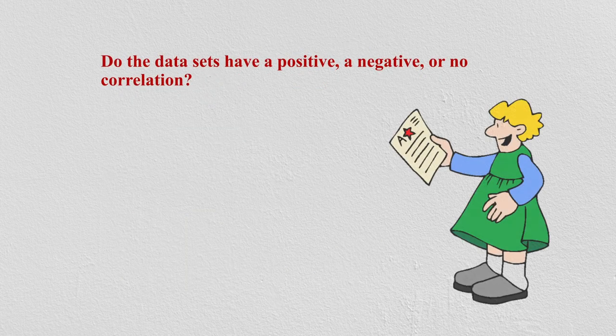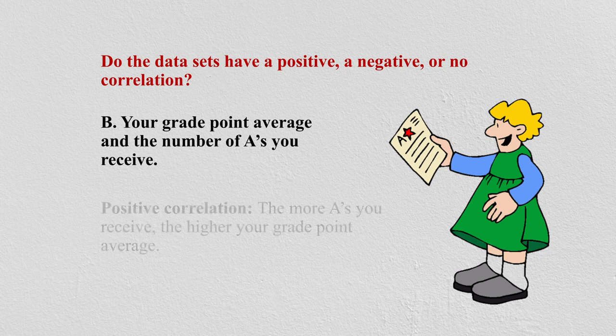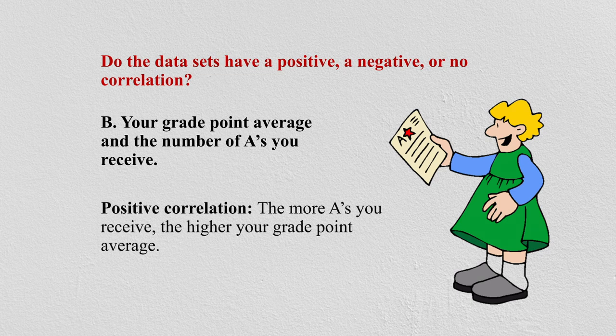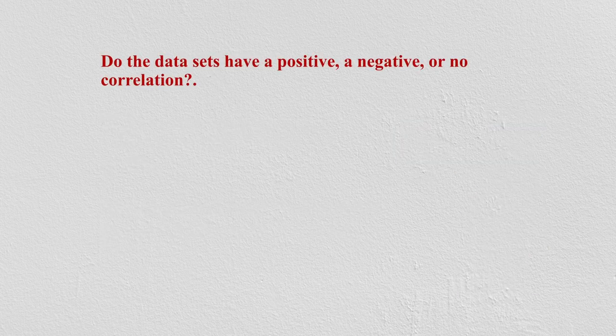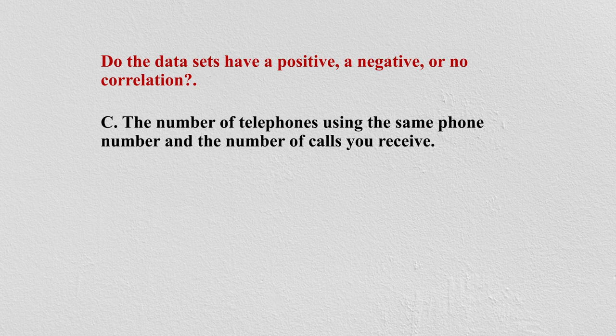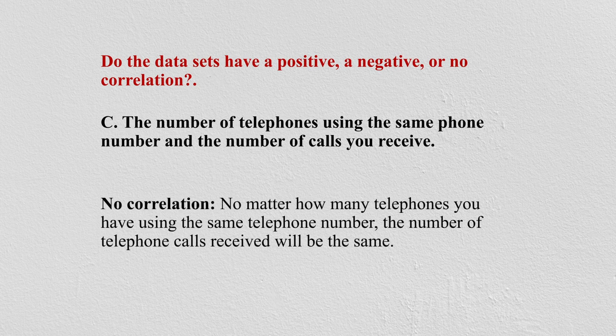Do the data sets have a positive, negative, or no correlation? Consider your grade point average and the number of A's you receive. This is a positive correlation — the more A's you receive, the higher your grade point average. Another example: the number of telephones using the same phone number and the number of calls you receive. No matter how many telephones you have using the same number, the number of calls received will be the same — so this is no correlation.